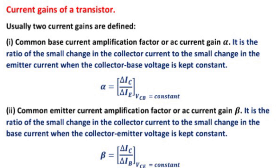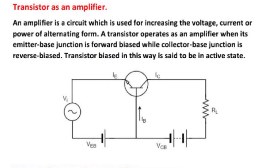Transistor as an amplifier. A transistor can be used as an amplifier. An amplifier is a circuit used for increasing the voltage, current, or power of alternating signals. A transistor operates as an amplifier when its emitter base junction is forward biased while the collector base junction is reverse biased. A transistor biased in this way is said to be in the active state.